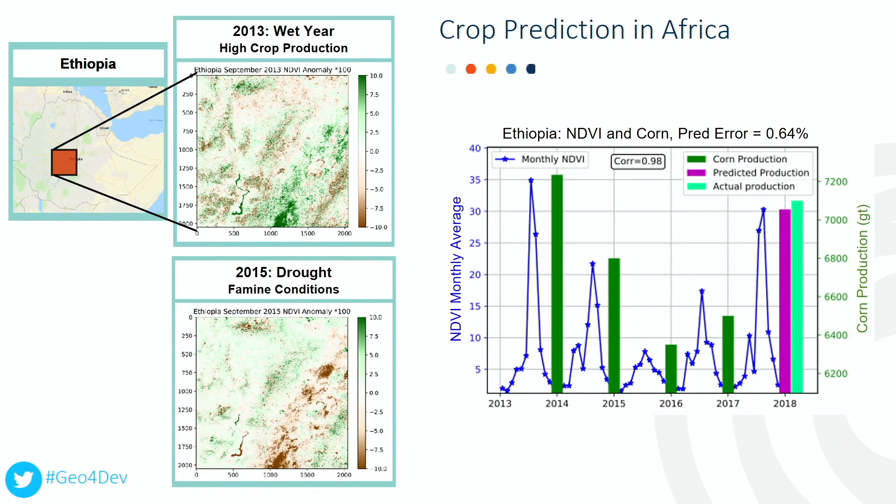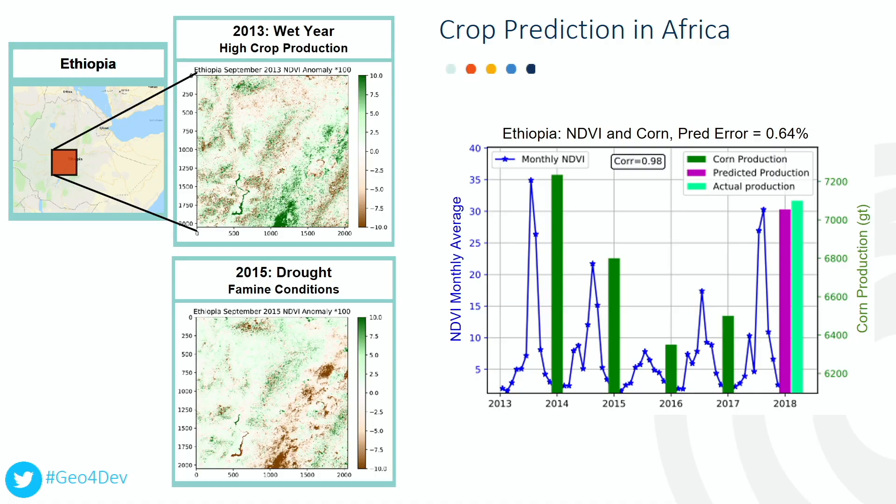Next, I applied this method in Africa by first picking out a box in each country where the farming is most dense. So here you can see Ethiopia during a wet year and a dry year. The difference is most evident in the Rift Valley, where the farming is most dense. The blue line is the monthly NDVI average, the peak of which is highly correlated to each country's main crops. Ethiopia has a correlation of 0.98 to corn production. I then predicted 2018 harvests and compared them to actual crop productions once these values were published. Ethiopia had an error of 0.64 percent.